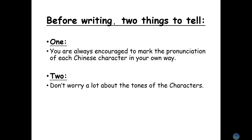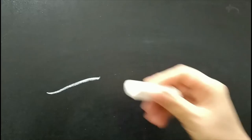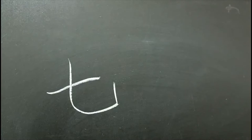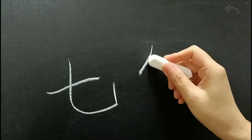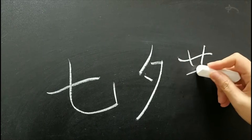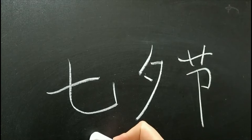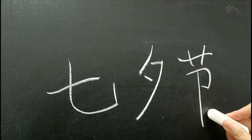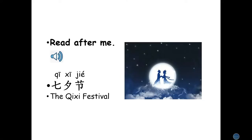Now let's write the festival Qi Xi Jie together. Qi: horizontal, cross, curve and hook. Xi: slide down, turn, adapt. Jie — I guess you have already known this character because we have written it many times in our previous episodes. Qi means seven, xi means evening, while jie means a festival or festivals.